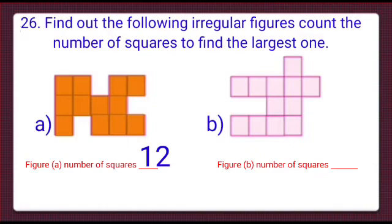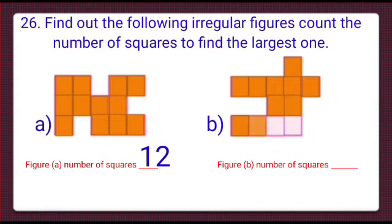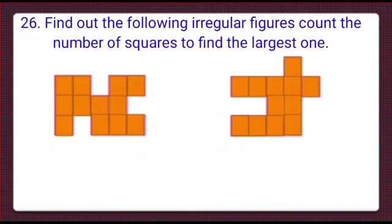We will count the number of squares in figure B. Counting: 1, 2, 3, 4, 5, 6, 7, 8, 9, 10, 11, and 12. There are 12 squares in figure B as well.